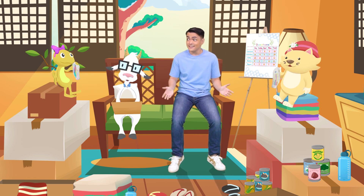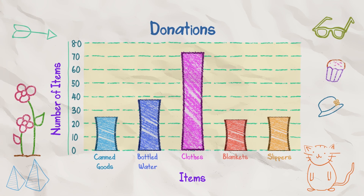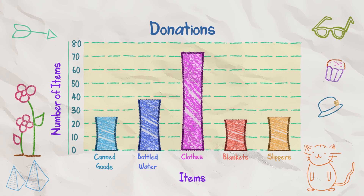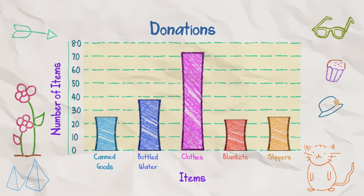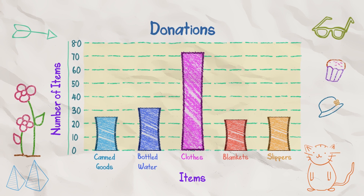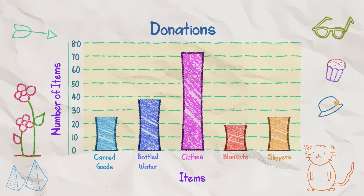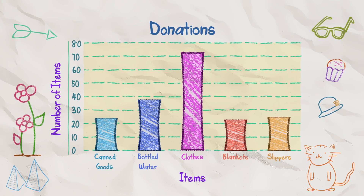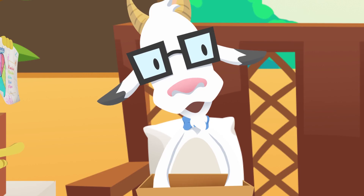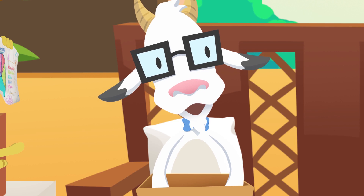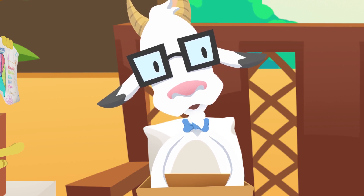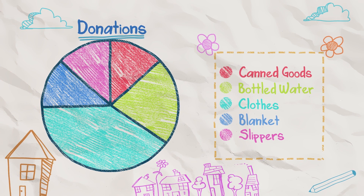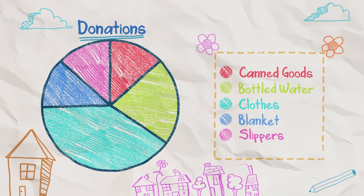Can we see it, guys? Here's the bar graph. As you can see, we have collected a lot of clothes. I think there's enough water, and almost the same number of blankets, slippers, and canned goods. Wow, I can see it clearly. You have the items we donated. In another view, this is the pie chart.